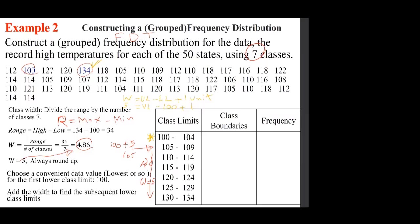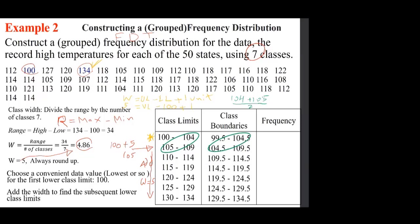Now let's look at class boundaries. There is a gap between 104 and 105 in the class limits. Boundaries say there is no gap. So you add 104 and 105 and divide by 2: (104 + 105) / 2 = 104.5. That is the upper boundary of the first class and the lower boundary of the second class.